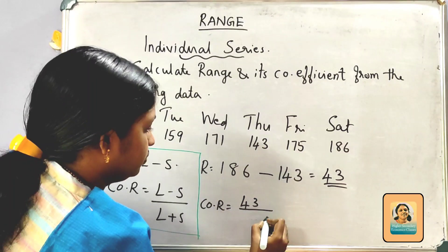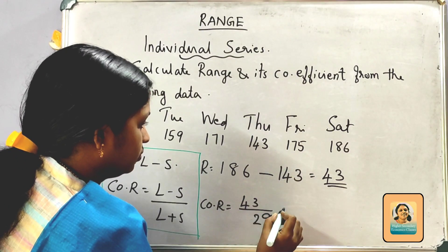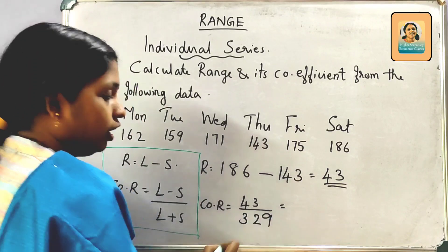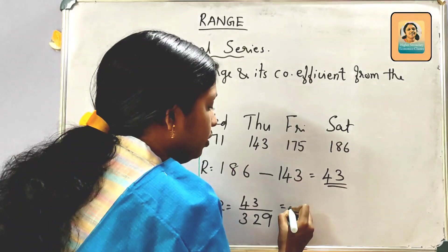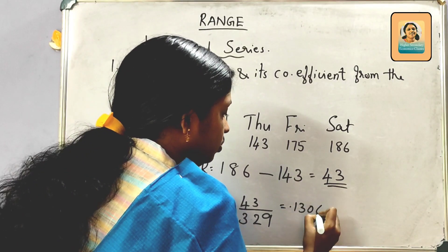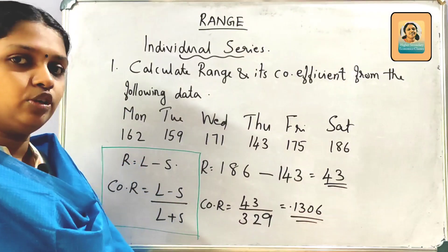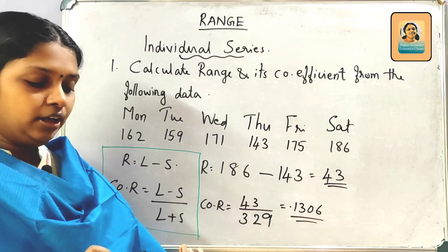Coefficient of Range is equal to L minus S divided by L plus S. That is 43 divided by L plus S. The result is 0.1306. This is the Coefficient of Range for the individual series.